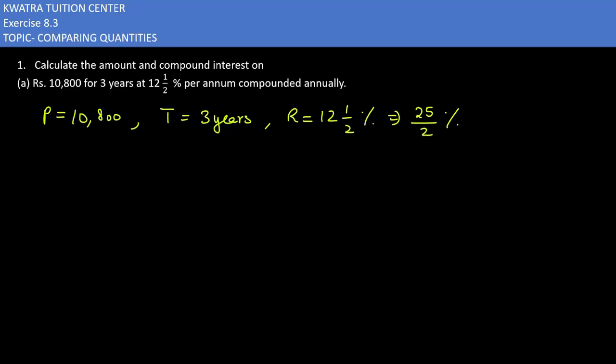So how do we find out? There is a direct formula to it. That is A is equal to P in bracket 1 plus R over 100 raised to power n.